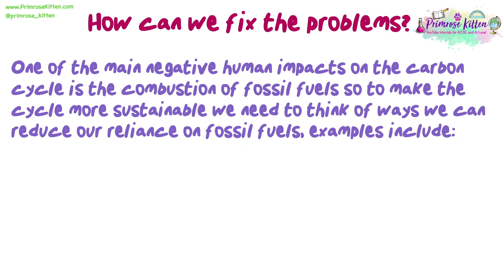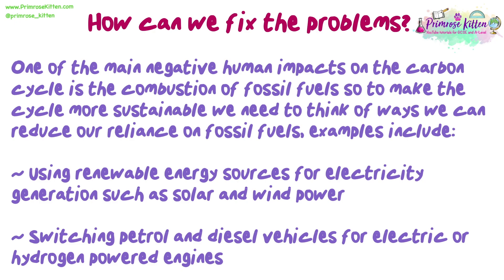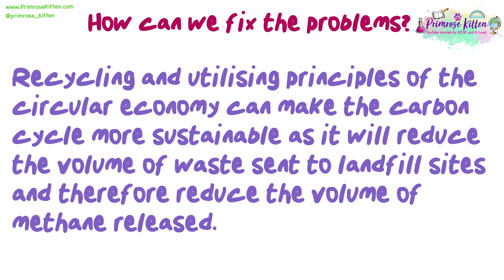One of the main negative human impacts on the carbon cycle is the combustion of fossil fuels. To make the cycle more sustainable, we need to think of ways we can reduce our reliance on fossil fuels. Examples include using renewable energy sources for electricity generation such as solar and wind power, and switching petrol and diesel vehicles for electric or hydrogen powered engines. Recycling and utilising principles of the circular economy can make the carbon cycle more sustainable as it will reduce the volume of waste sent to landfill sites and therefore reduce the volume of methane released.